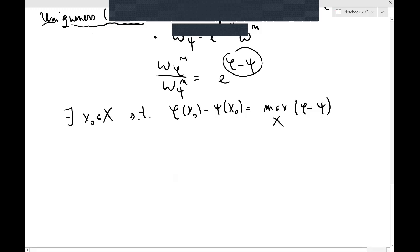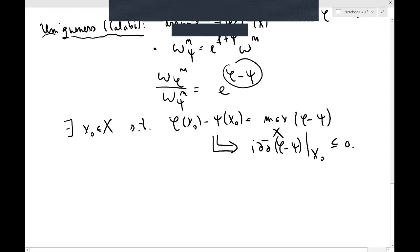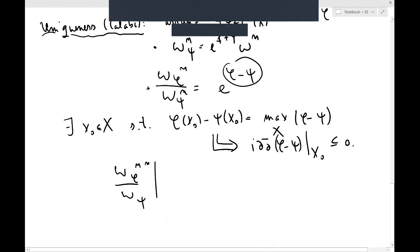So on the maximizing point, obviously the Hessian is negative semi-definite, so the real part, which is the complexified Hessian, is also going to be negative semi-definite. So from this we get the complexified Hessian at x_0 is negative semi-definite, and that will give us something nice. So let's look at the left-hand side here at x_0.